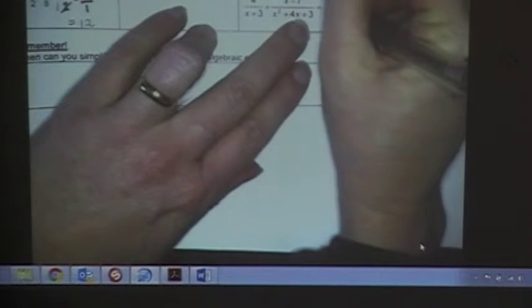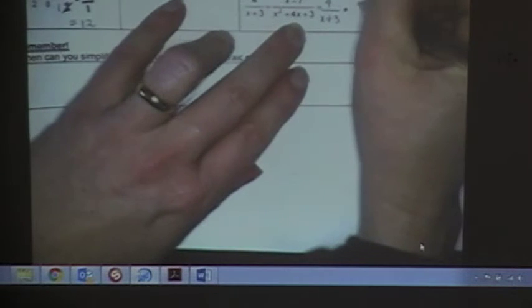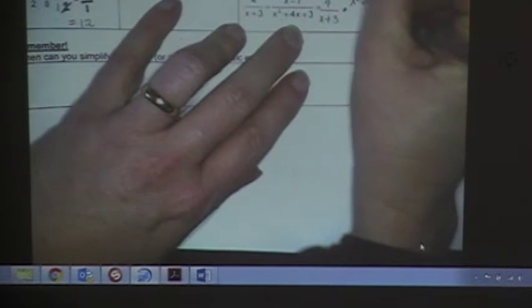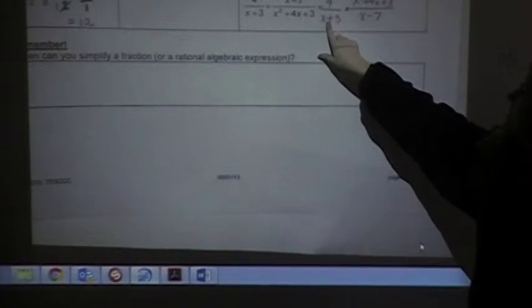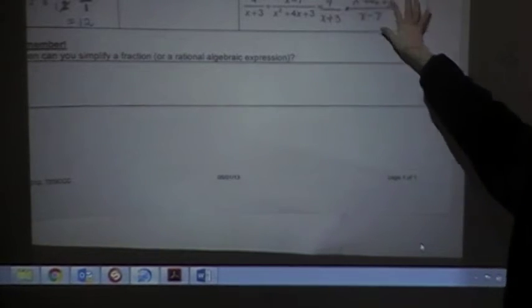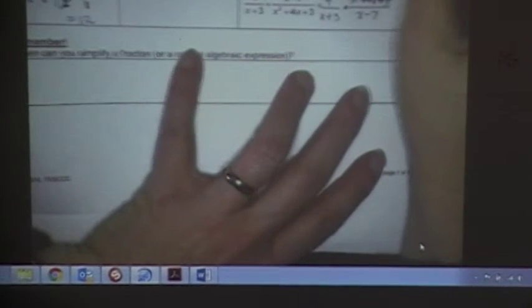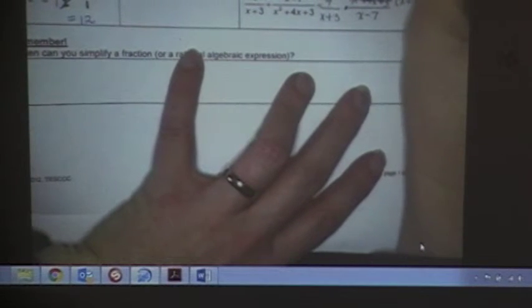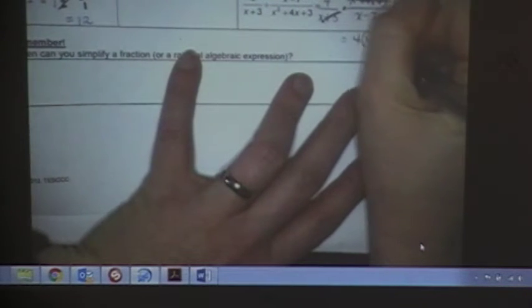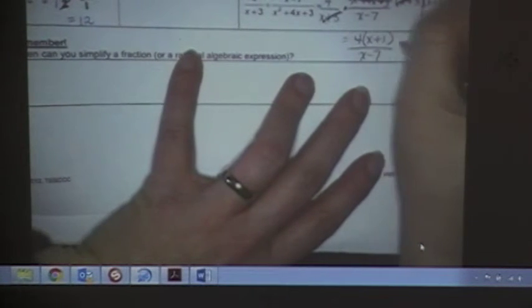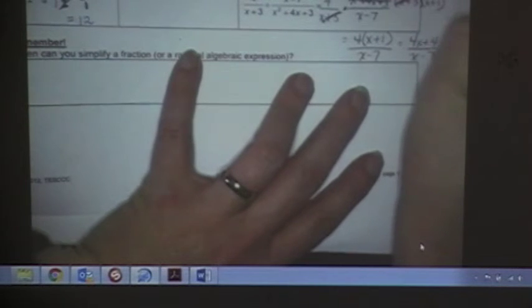All right. Last one. Keep the first fraction the same. Switch it to multiplication. Flip the second one over. Then, in order to know if I have common factors, I'm going to have to factor this top trinomial. Nothing else will factor. Four is as simplified as it gets. But this will factor as x plus 3, x plus 1. X plus 3 is canceled, 4 times x plus 1 over x minus 7, which is 4x plus 4 over x minus 7.